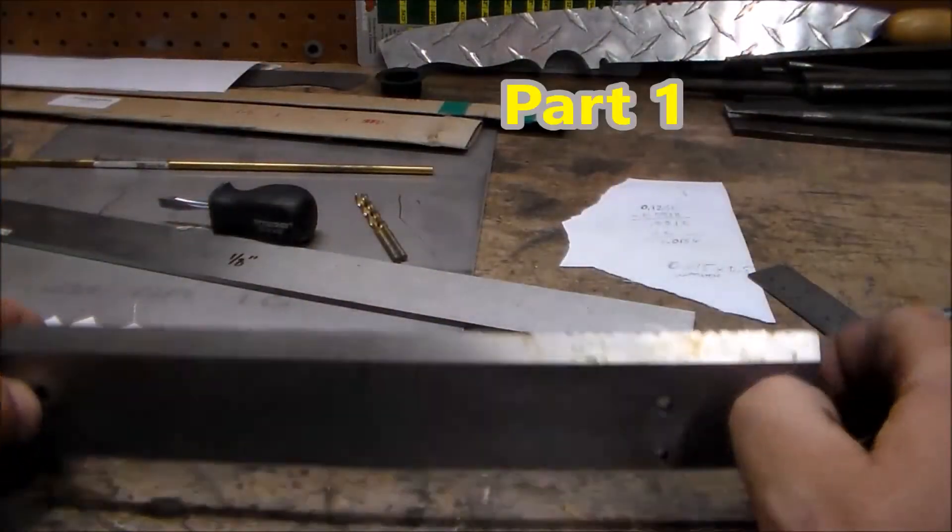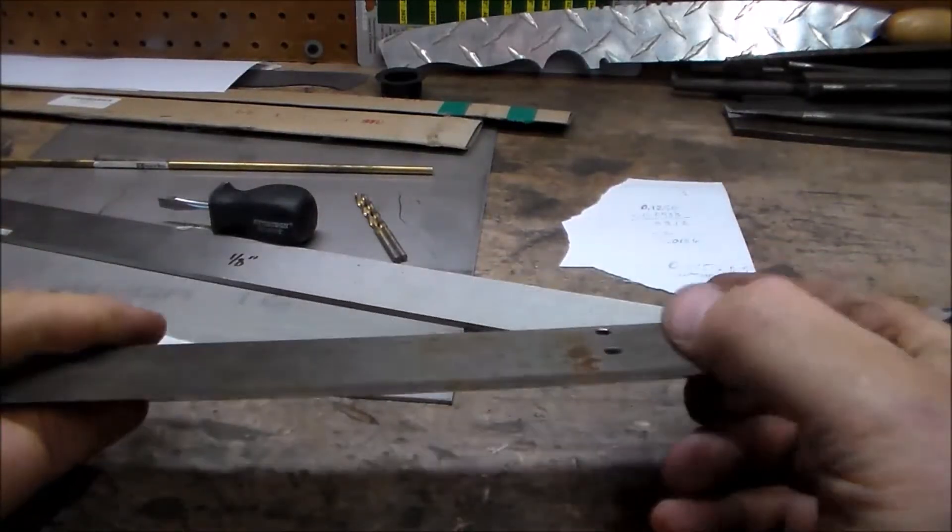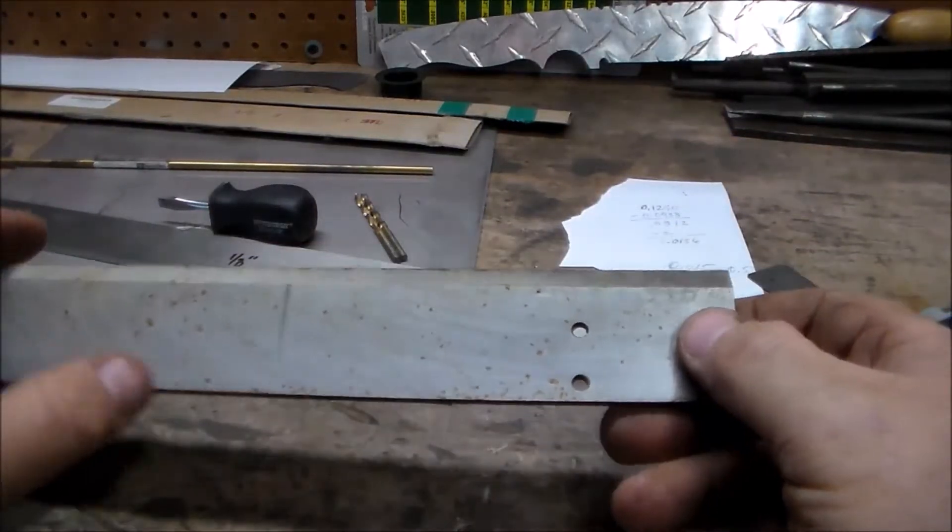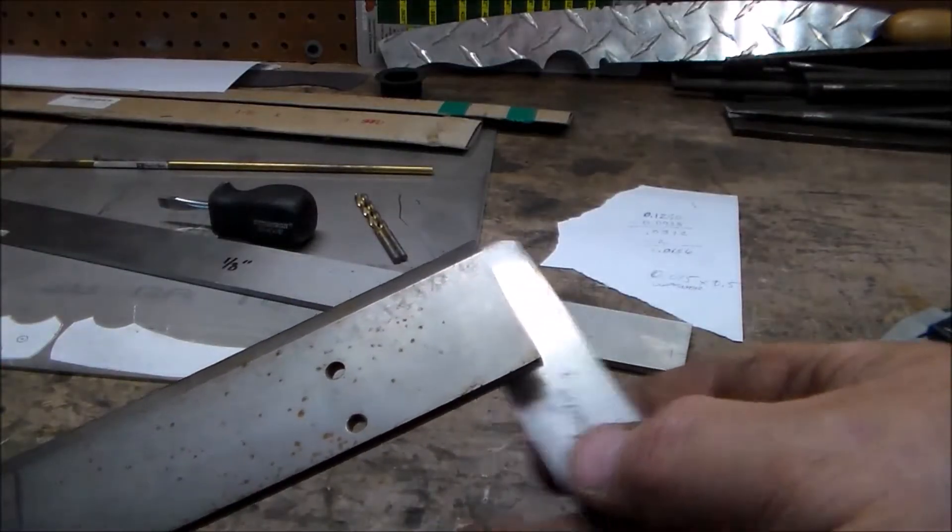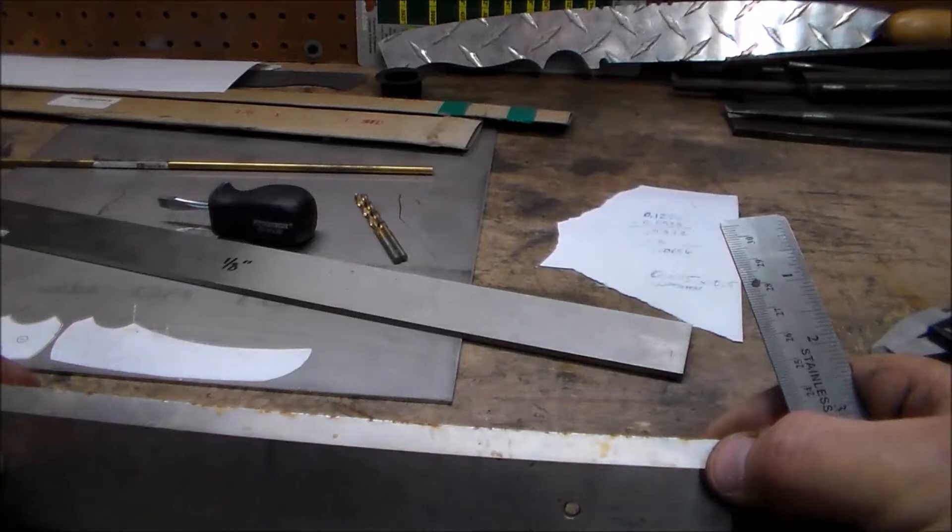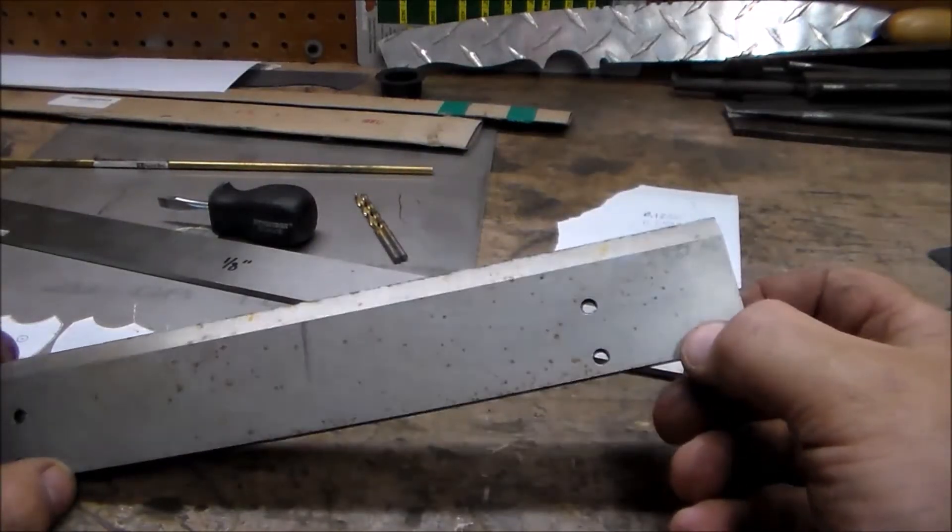Alright, this is a piece of a planer blade. It's from an industrial, like a lumber mill type of setting. It's just under two inches and my brother gave this to me. He's already made a knife out of it and it turned out pretty good.